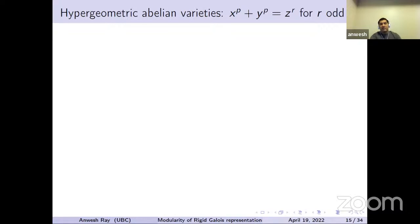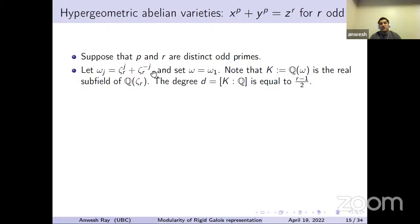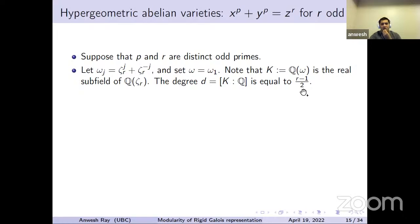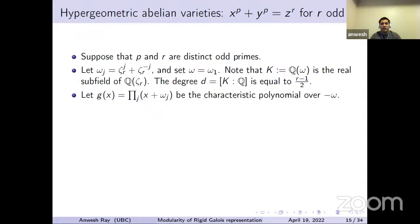When R is odd, we no longer have families of elliptic curves — we have families of abelian varieties of GL_2 type. Now P and R are distinct odd primes. The construction is more involved: the abelian varieties we construct need to have real multiplication by the totally real field K. Recall that zeta_R is the R-th primitive root of unity, and omega_g = zeta_R^g + zeta_R^{−g}. Setting omega = omega_1, omega generates the field K — the totally real subfield of Q(zeta_R) — and the degree of K over Q is (R−1)/2. This is the totally real field over which the Galois representation is defined.